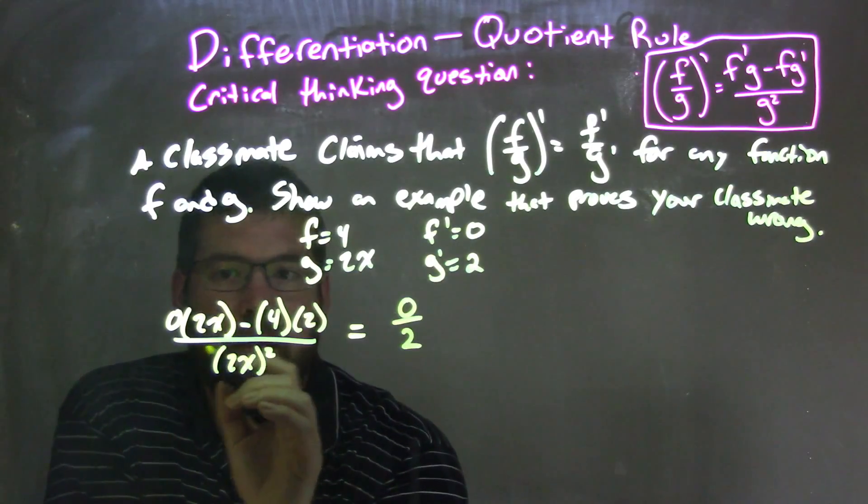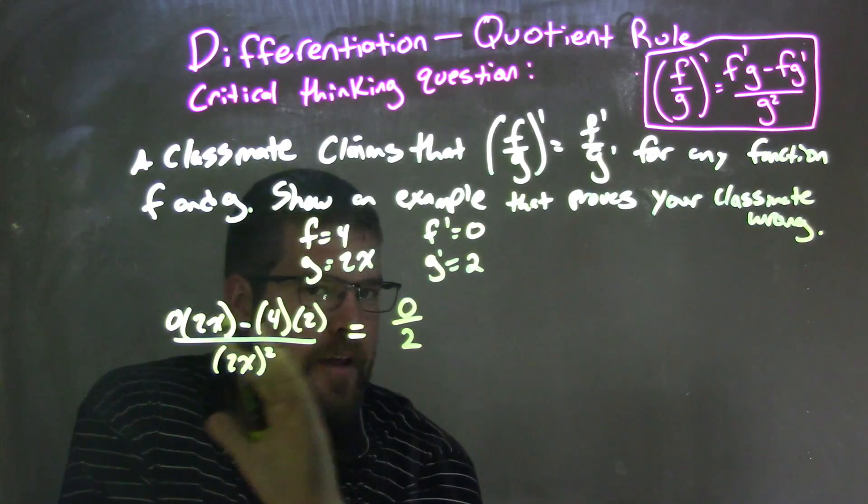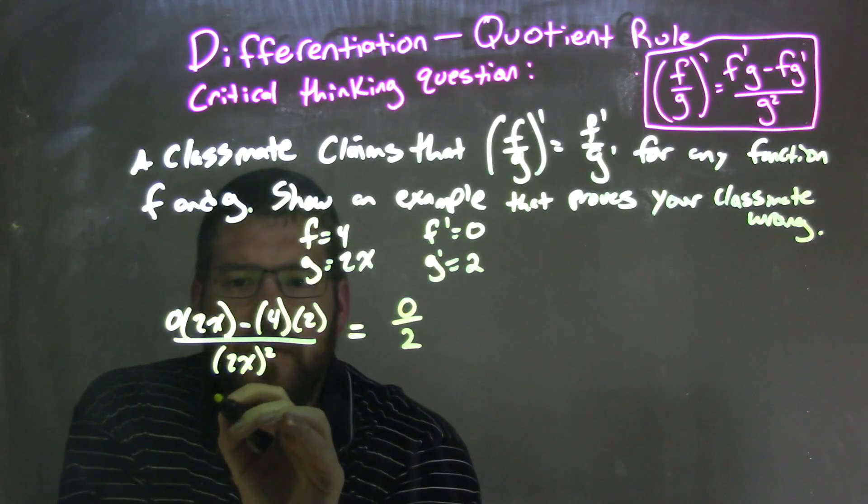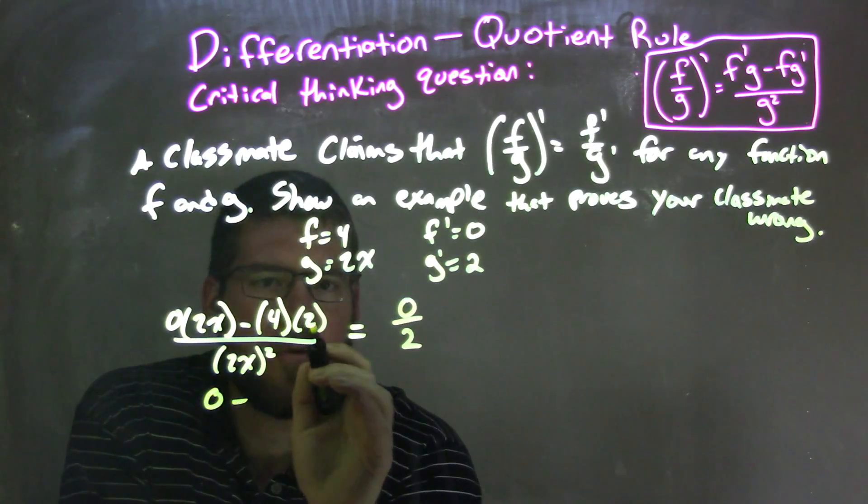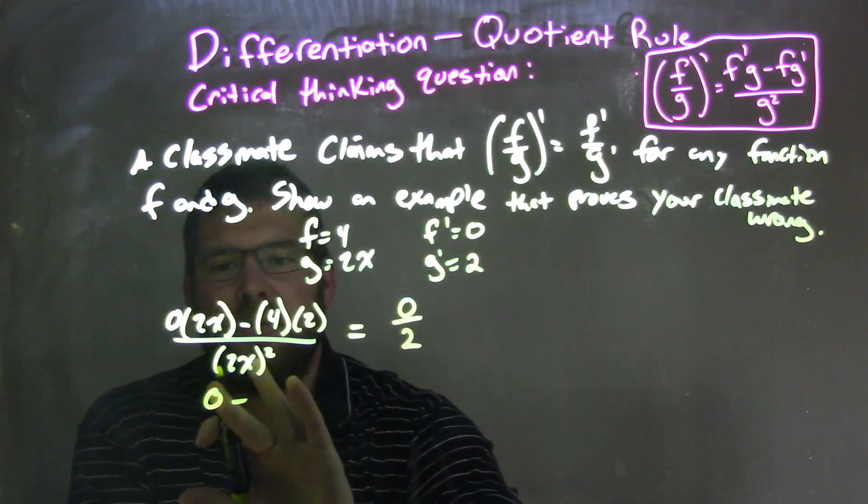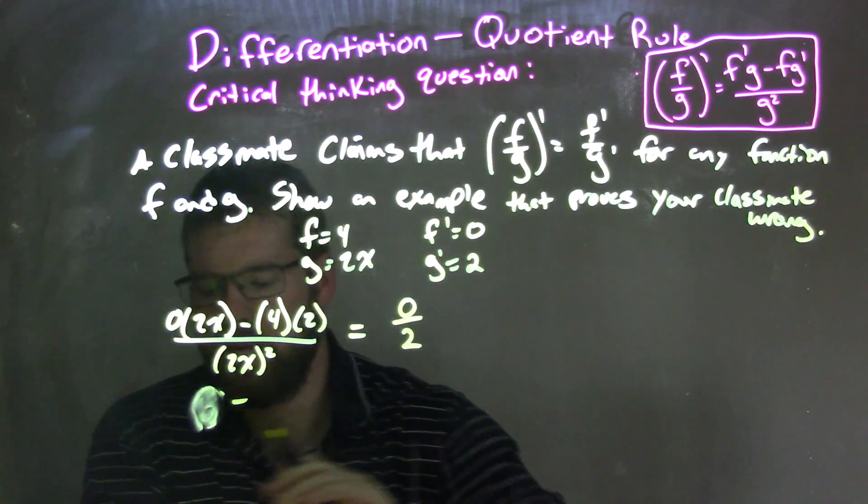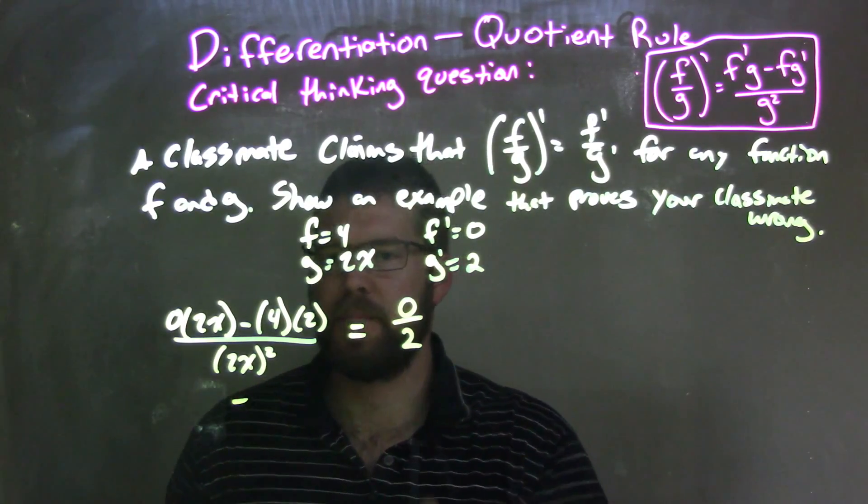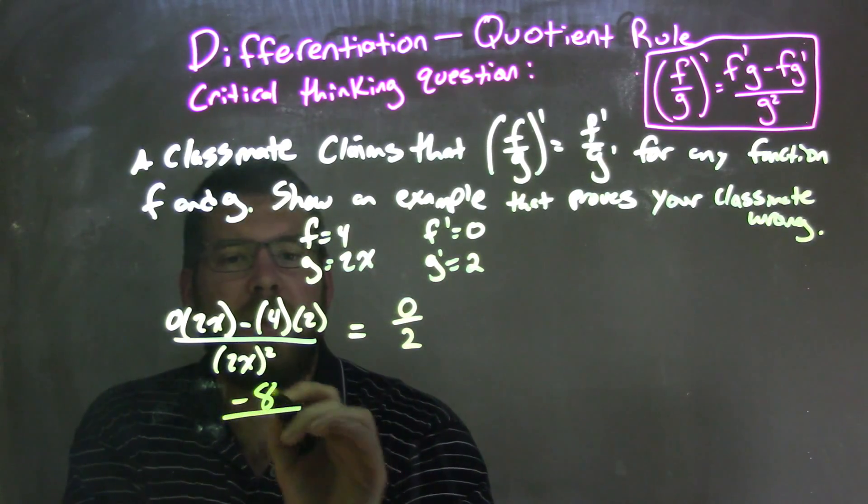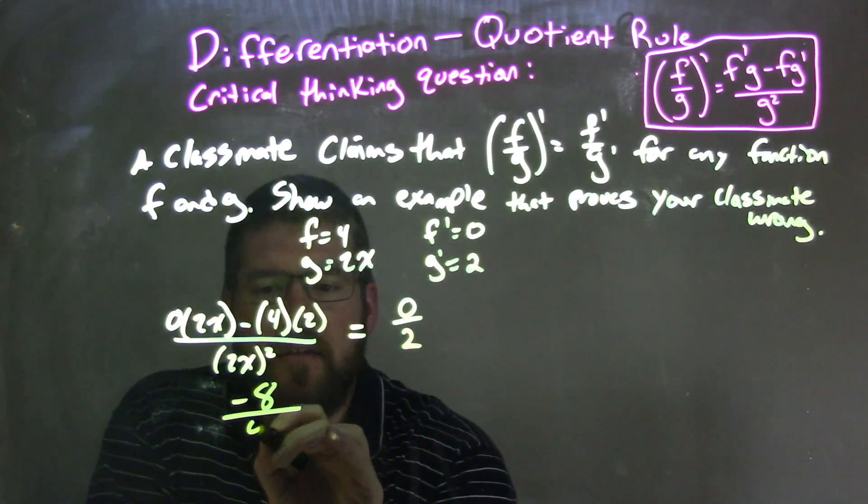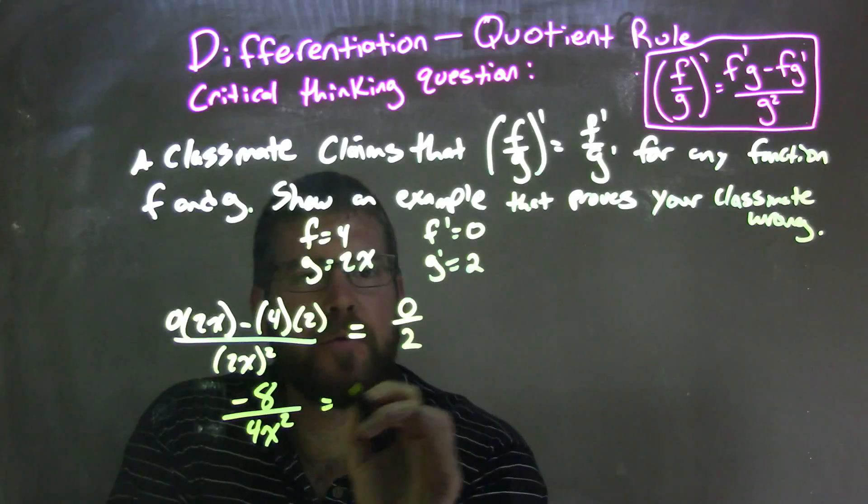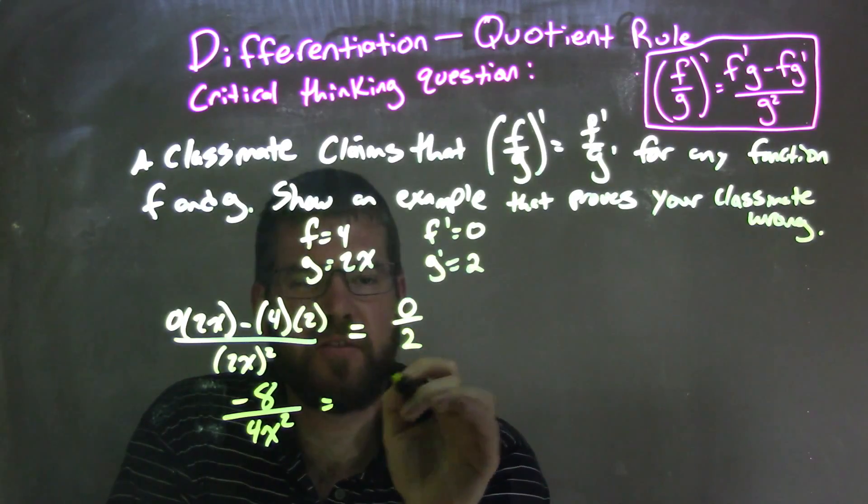So let's just simplify this. On each side, don't bring anything over the equal side. We're going to see if they are equal on both sides. 0 times 2x is 0, so we have 0 minus 4 times 2, which is 8. So we really don't need that 0 there. Let's eliminate that. We have a negative 8 up top, and the denominator, 2x squared is 4x squared. That equals 0. 0 over 2 is 0.